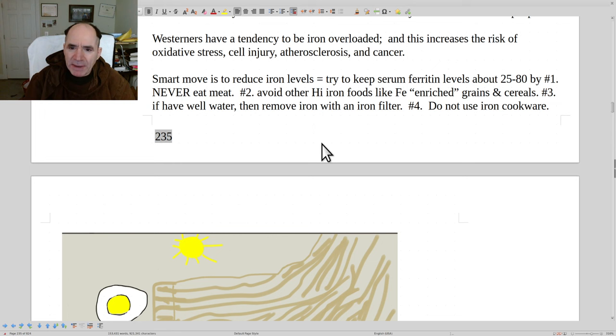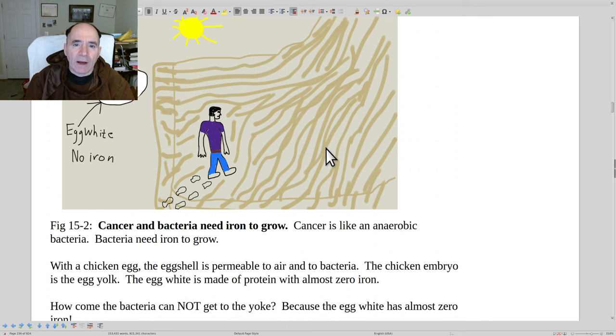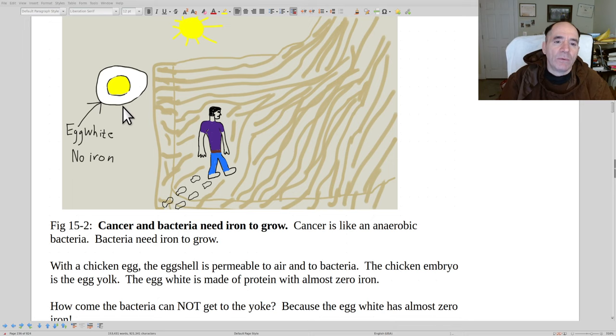The Bantus used to have problems from using iron cookware. Here's a nice picture showing what's going on with iron with regard to infections. Imagine you were going to walk through the desert 100 miles with no food or water. You couldn't do it because you need water. There's the hot sun. In an egg, the yolk is where the embryo grows.